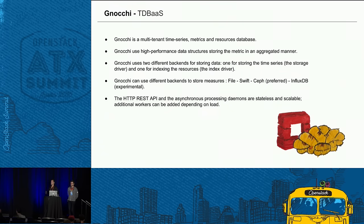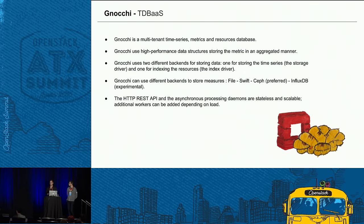To achieve this, Gnocchi uses two different backends. First, an indexer that indexes resources to match metrics, using a MySQL backend. Then a storage driver that stores the final metrics into a distributed storage — typically Swift or Ceph. Gnocchi also has its own API as a stateless process, so you can spawn more processes as metrics increase. The asynchronous processing is also stateless, allowing you to add more processes to handle more data in parallel.